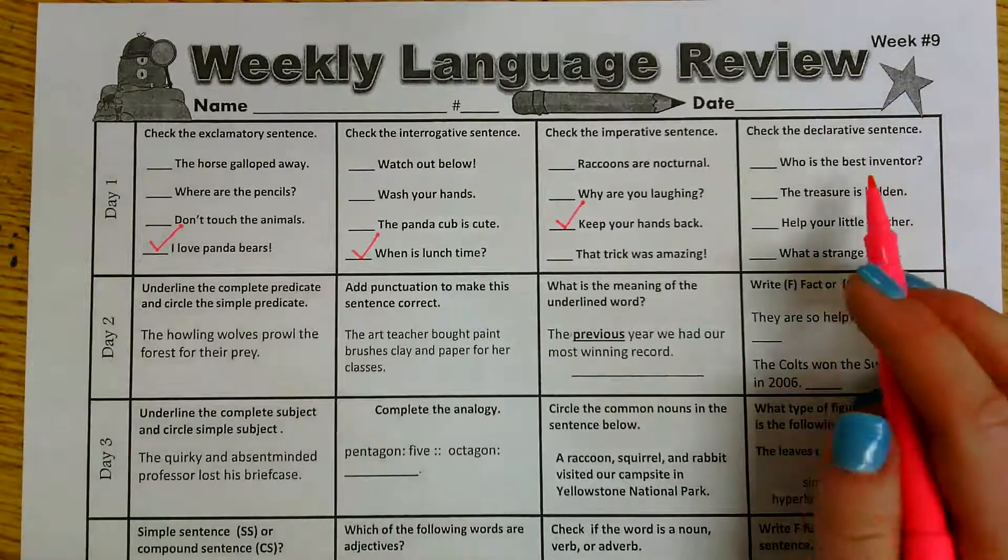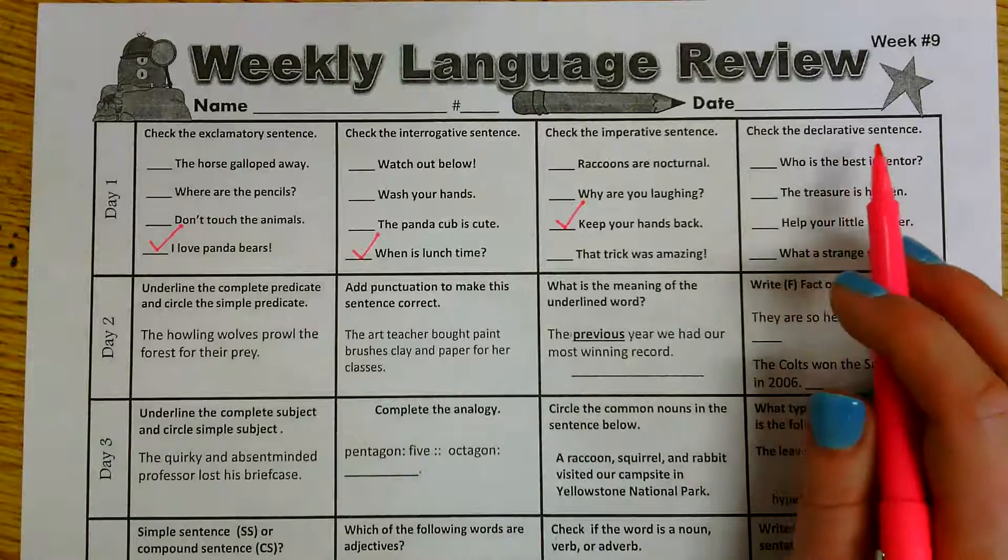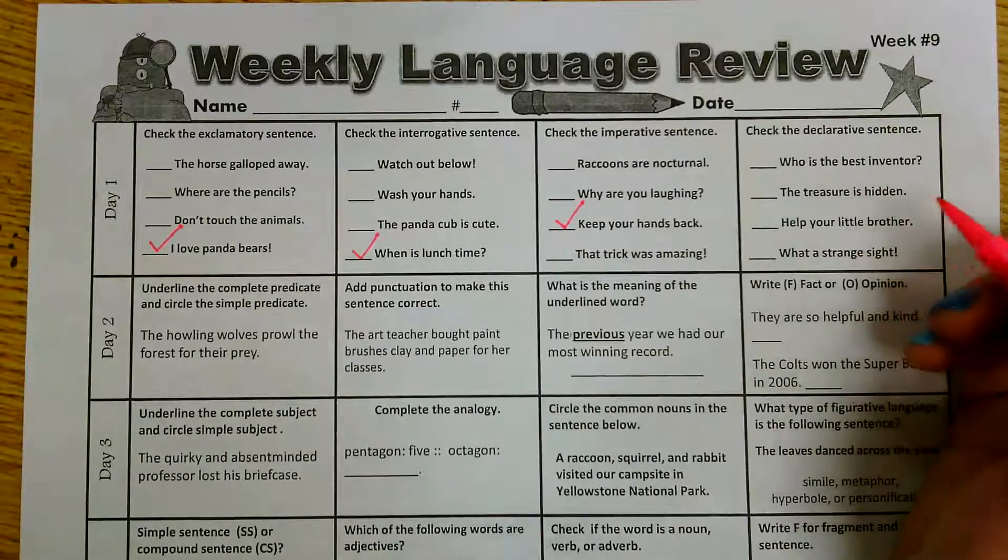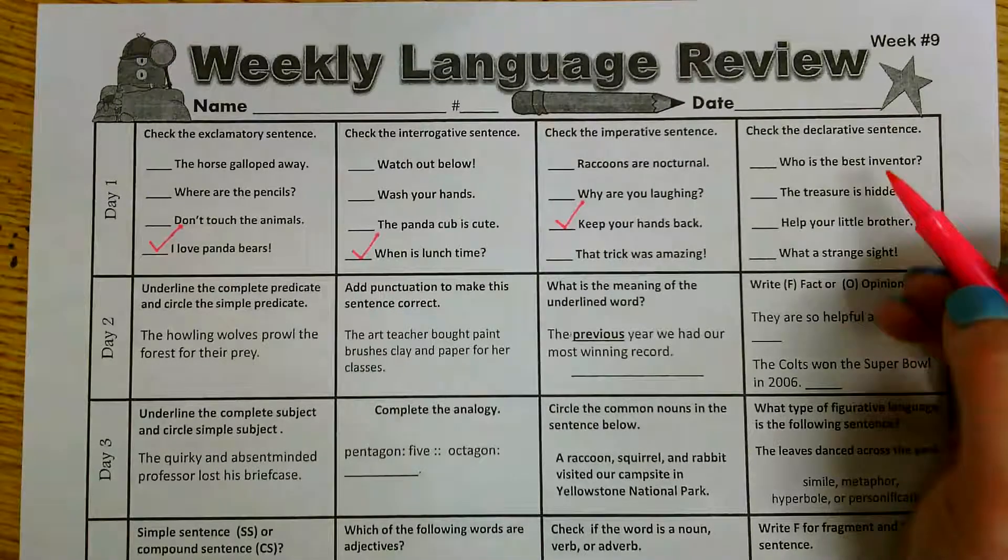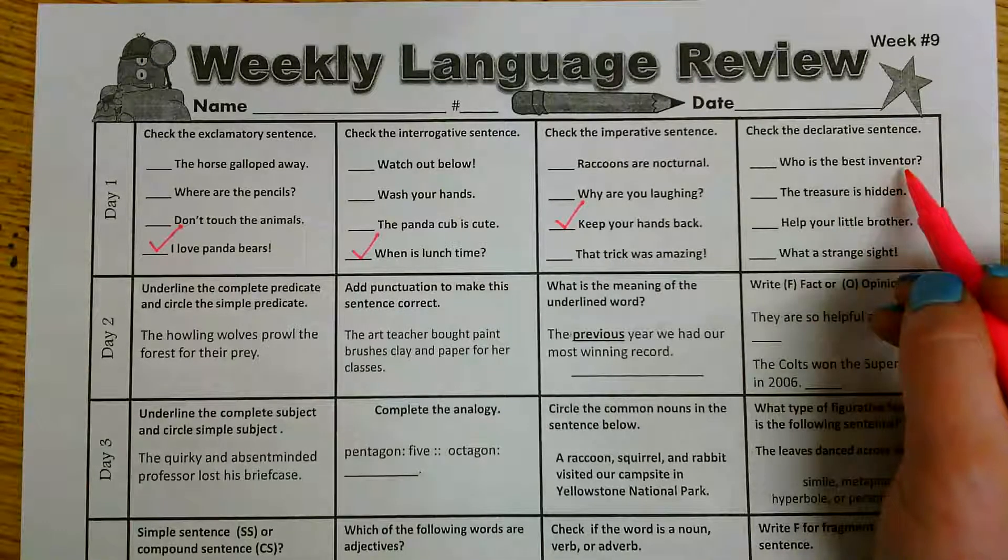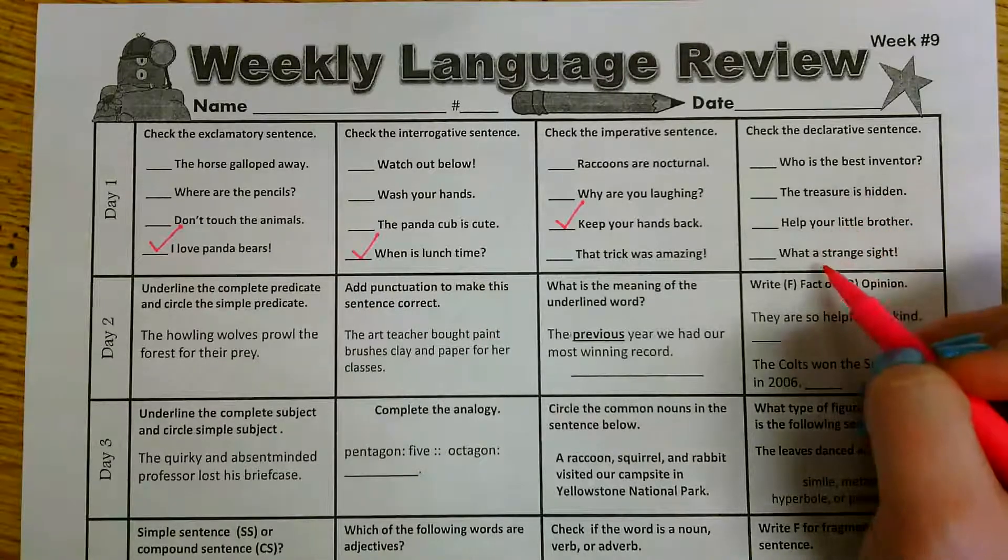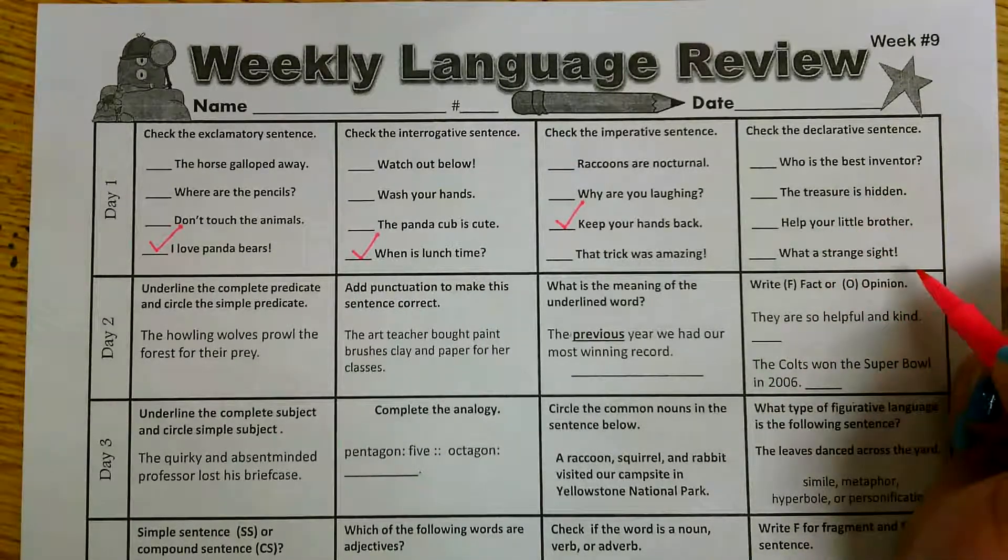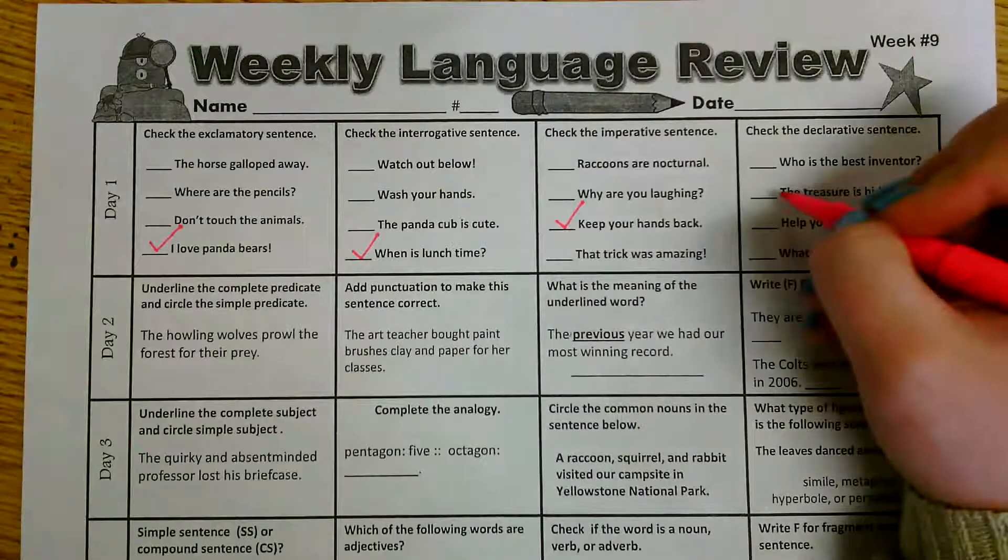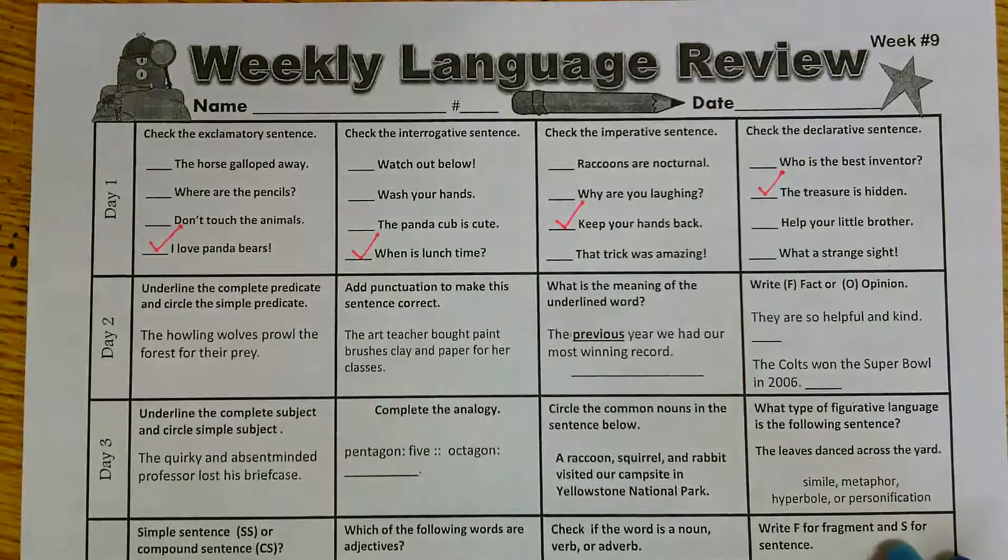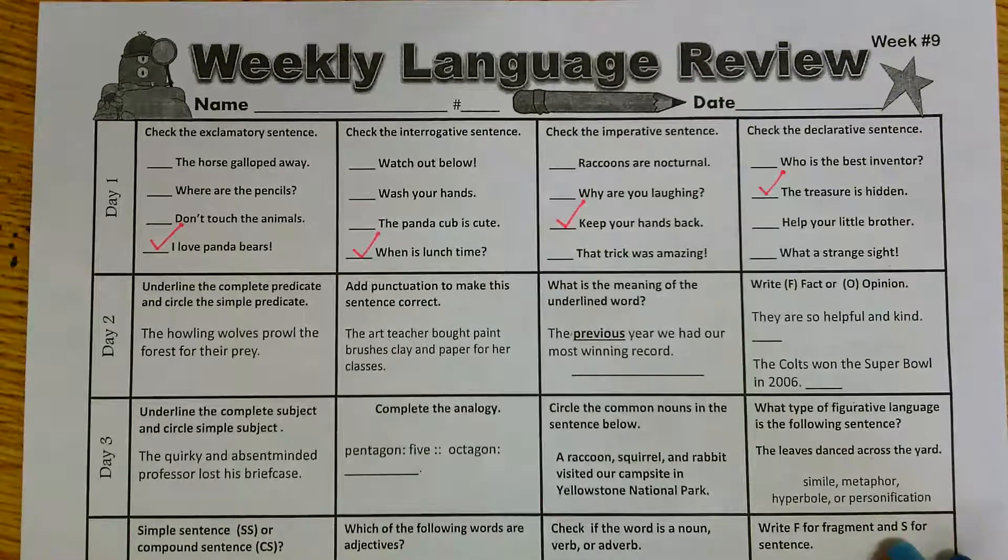And the last one for day one, check the declarative sentence. So a declarative sentence is just declaring something. It's making some kind of statement. So we have who is the best inventor, the treasure is hidden, help your little brother, what a strange sight. Alright, on this one, the treasure is hidden would be our declarative sentence because you are just stating something. You are saying that treasure is hidden.